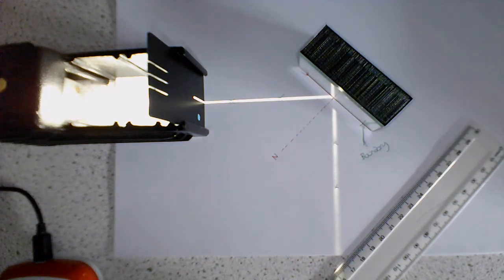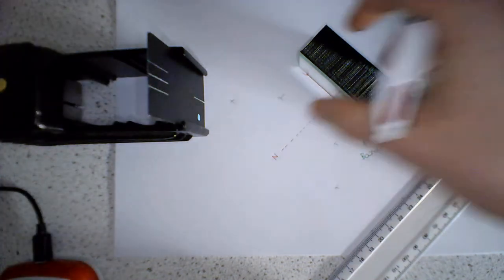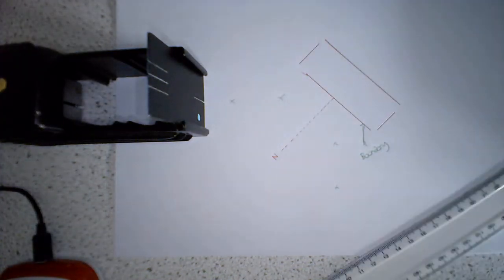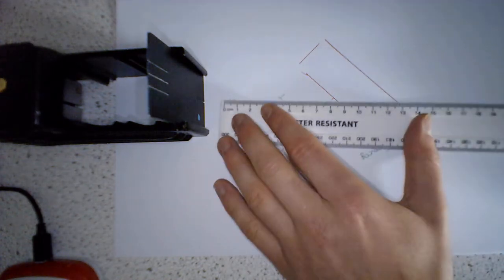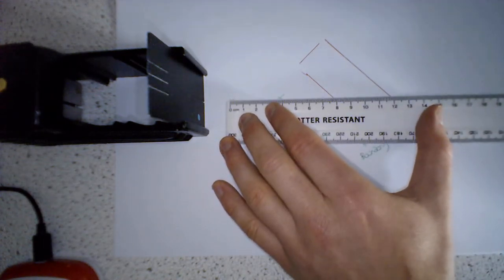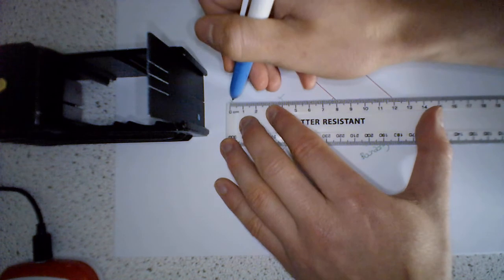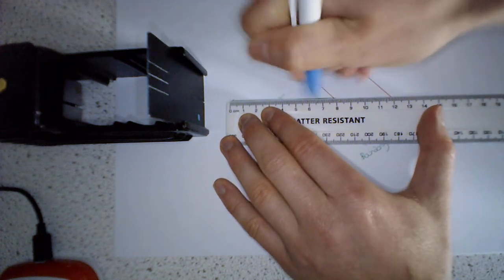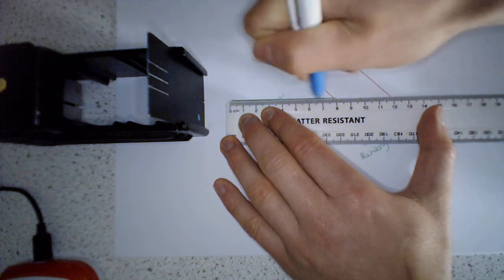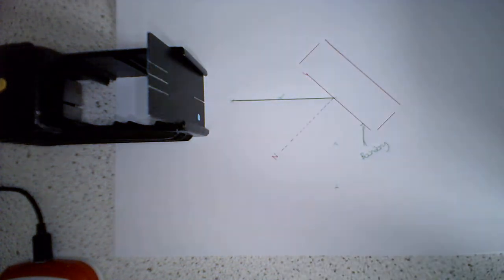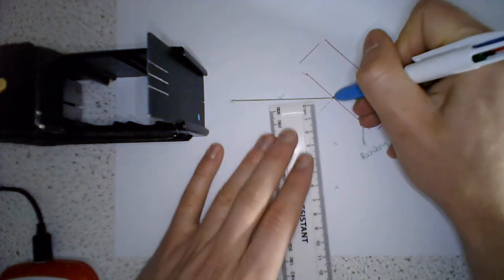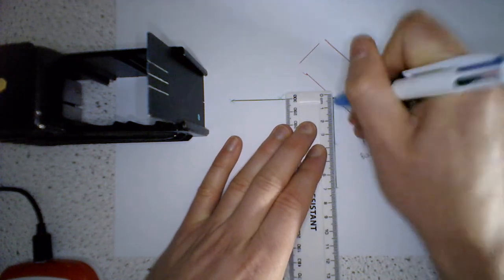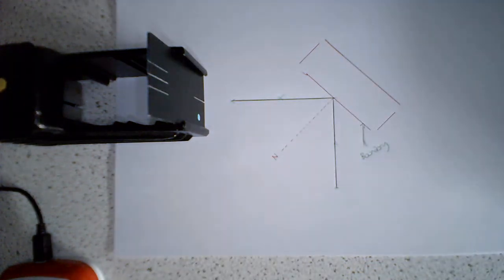So then what we can do is we can turn off our light, move the mirror away, and we can actually draw where the rays of light went. So you can see the line went through here, went through here. Okay, so I'm not going to be crazily precise about this. Let's put somewhere a little bit like that.